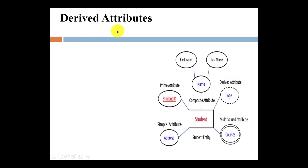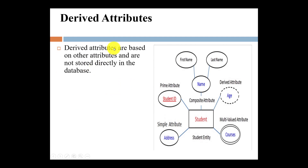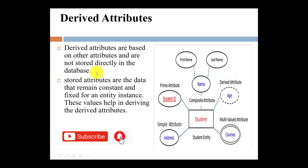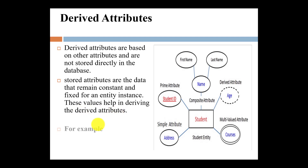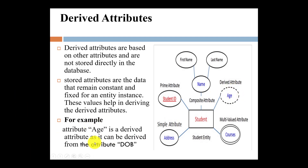Now what is a derived attribute? A derived attribute is based on another attribute — it depends on another attribute and is not stored directly in the database; instead, it is derived. The stored attribute is data that remains constant for an entity instance, and that fixed value helps in deriving the derived attribute. For example, age is a derived attribute — it can be derived from the attribute date of birth. Date of birth is the stored attribute because it remains constant, but from this fixed value we can derive age. The derived attribute is represented by a dotted line in the ER diagram.